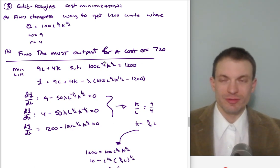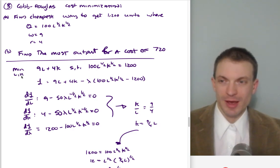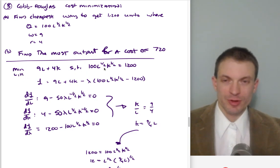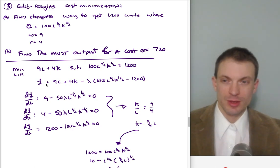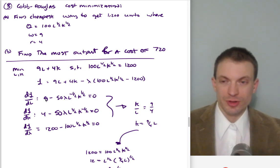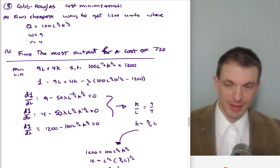Let's set up our Lagrangian. We're going to minimize the expenditure on labor and the expenditure on capital by choosing labor and capital, subject to this production technology hitting our target level of output. I'll write the Lagrangian as the objective function minus lambda times the constraint, then take partials with respect to labor, capital, and lambda.